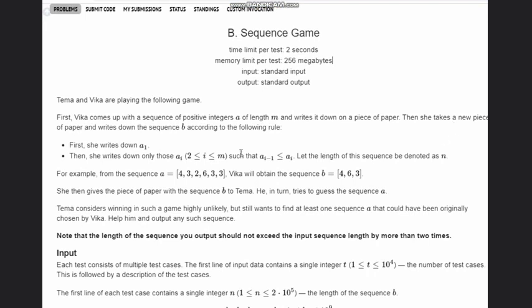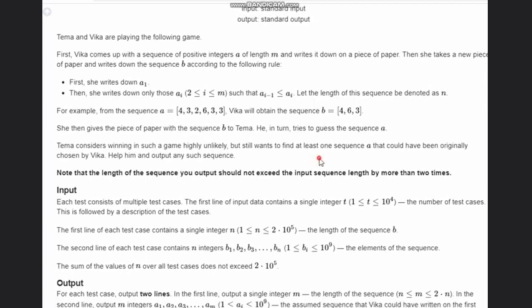Then she takes a new piece of paper and writes down the sequence B according to the following rule. She writes down A_1, and then she writes down only those A_i which follow this condition: A_{i-1} less than or equal to A_i.